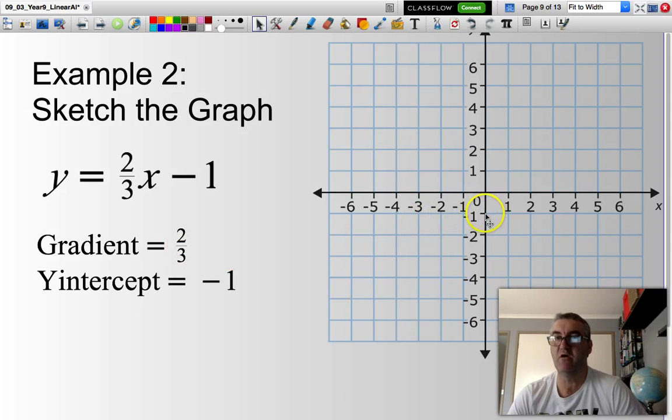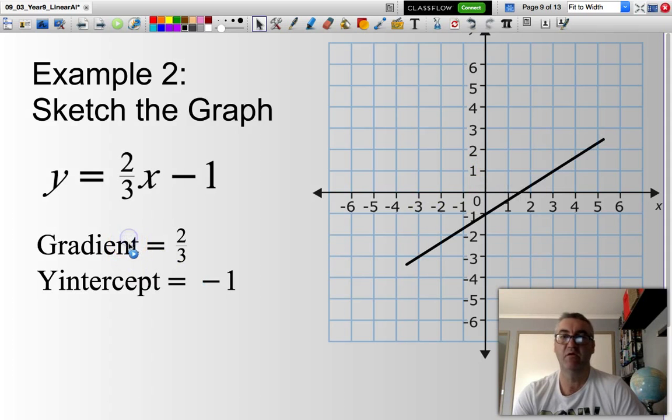So, what do I need to do? Find the y-intercept on the Cartesian plane, negative 1. That's one point. The next point, I know that I have to go up 2 and across 3. That is my gradient. So, from that negative 1, I'll go up 2 and across 3, starting from the y-intercept of negative 1.